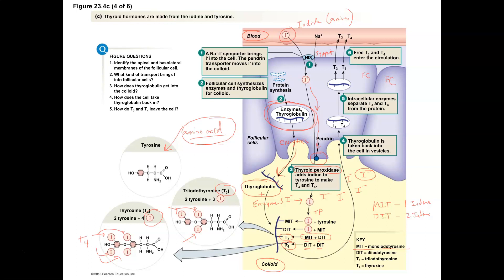We can couple these molecules together to produce T3 and T4. If you take an MIT and a DIT and link those together, one molecule has one iodine and the other has two, so when you link them you get the T3 thyroid hormone. If you take two DITs and link them together enzymatically, you get the T4 thyroid hormone. This is how we produce T3 and T4. Once you have created the T3 and T4, you've created about a two to three month supply inside the colloid of the follicles of the thyroid gland.